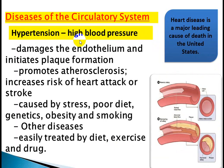What happens in high blood pressure and what are the causes? 95% of cases are due to an unknown cause, which is called unknown etiology. However, there is a remaining 5% of cases with known causes, which we will discuss.